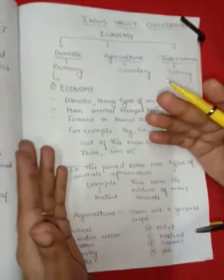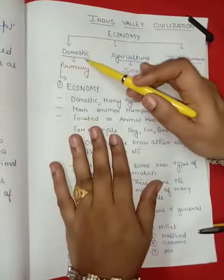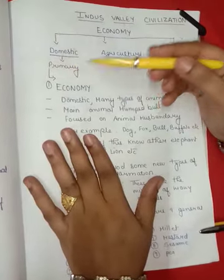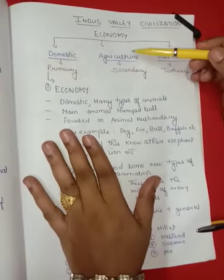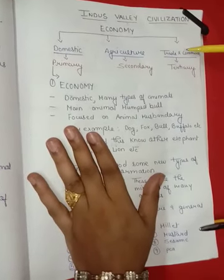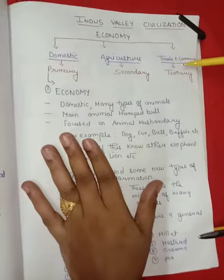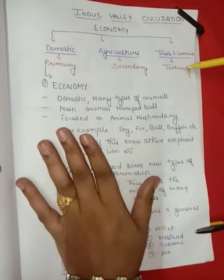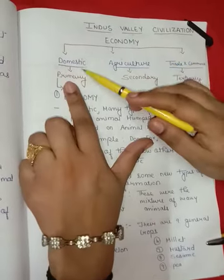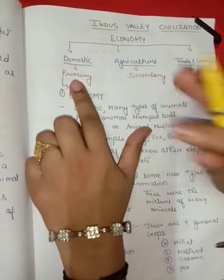The economy of Indus Valley Civilization is divided into three parts. First is domestic — it was primary. Second is agriculture — it was secondary. Third is trade and commerce — it was tertiary. First we discuss the domestic sector.